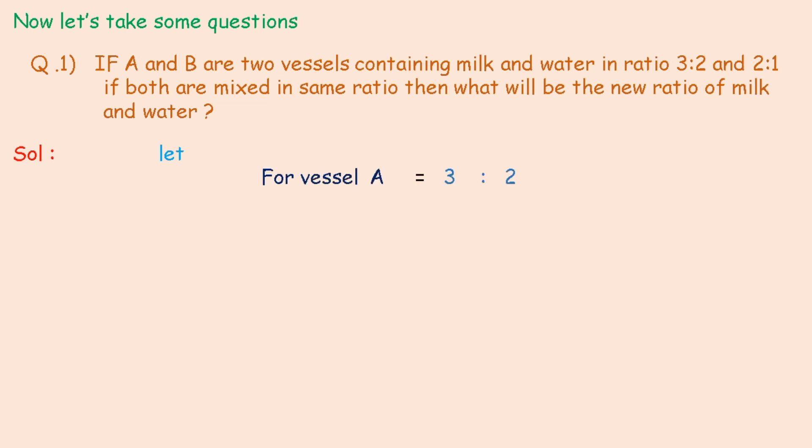For vessel A, 3 ratio 2. For vessel B, 2 ratio 1, milk and water. Total amount of solution in vessel A is equal to 5 liters.